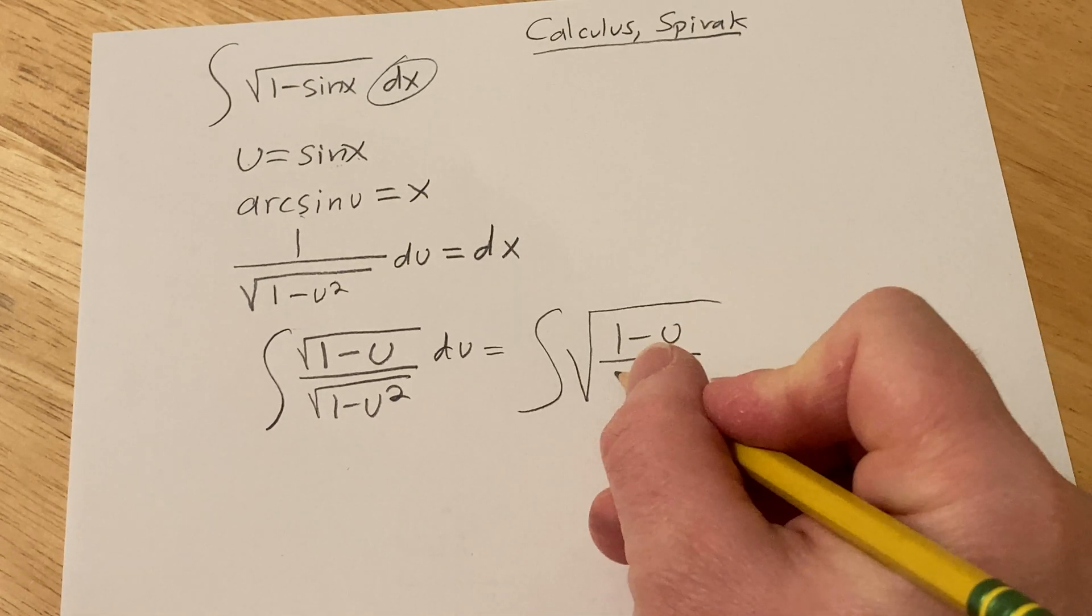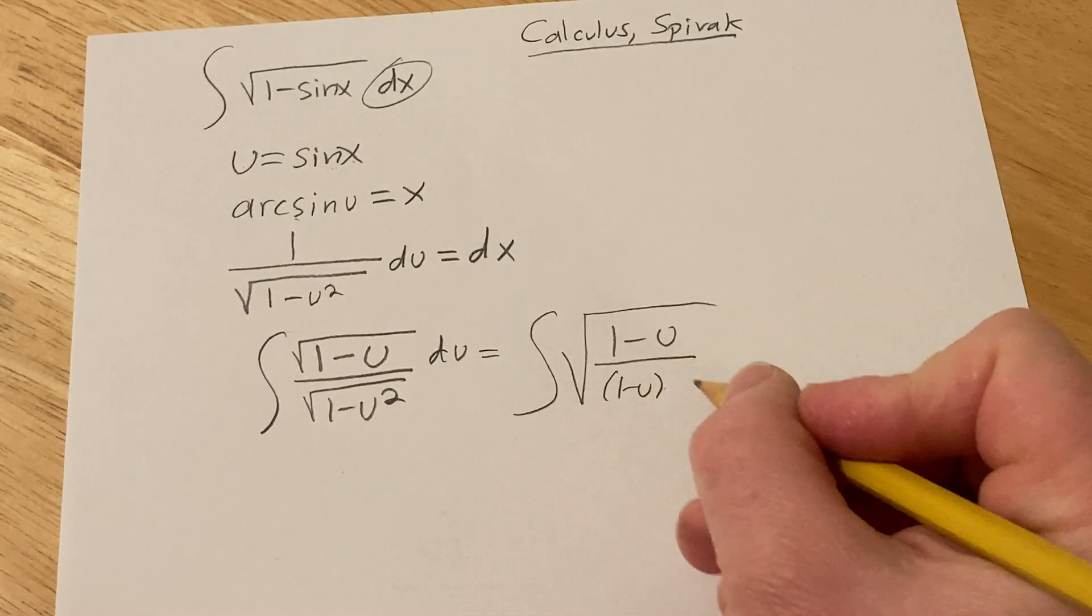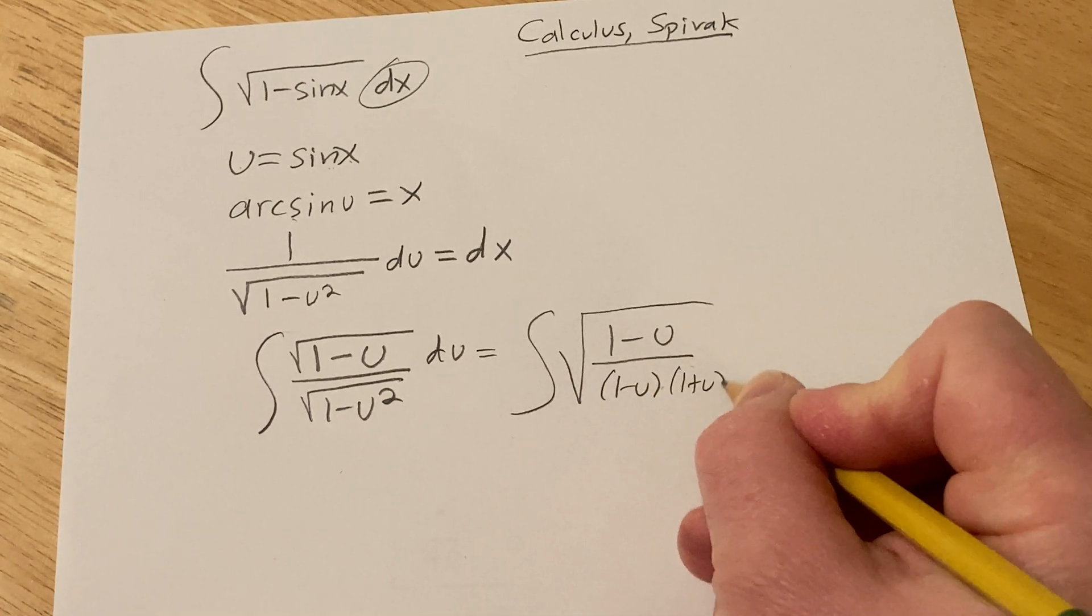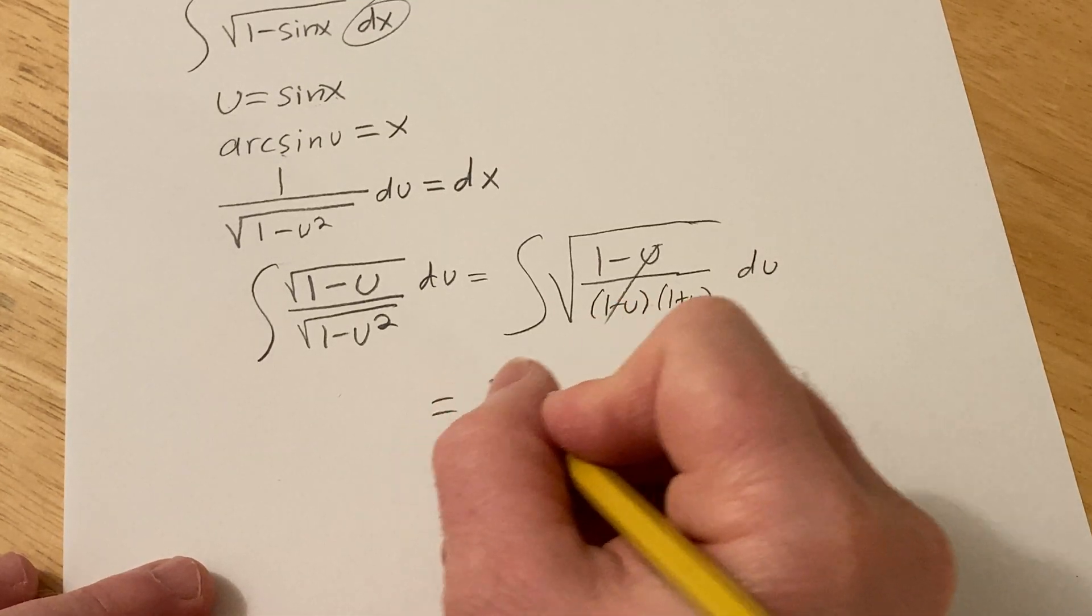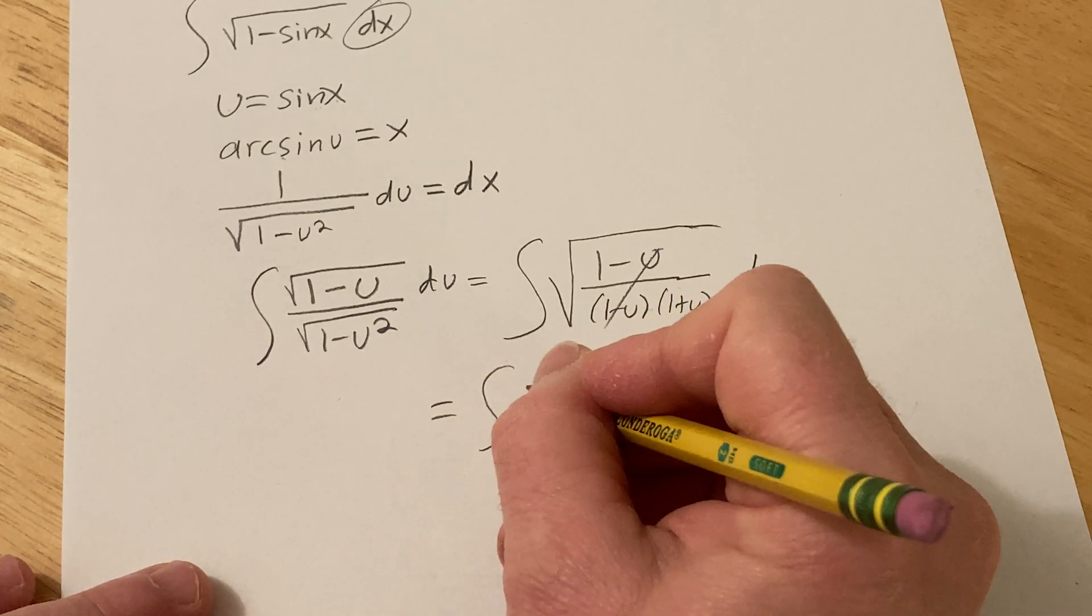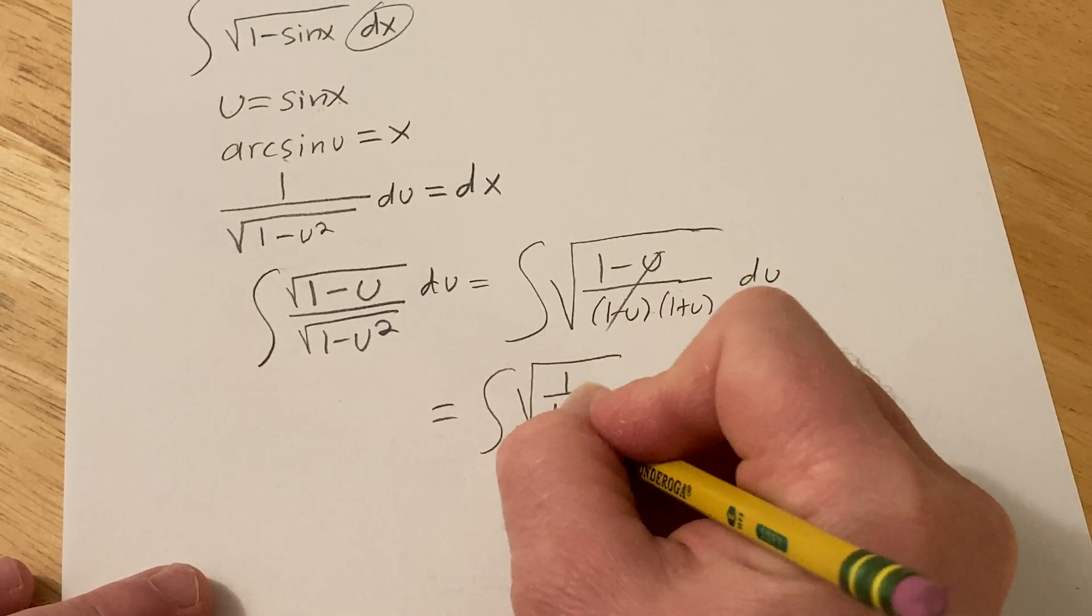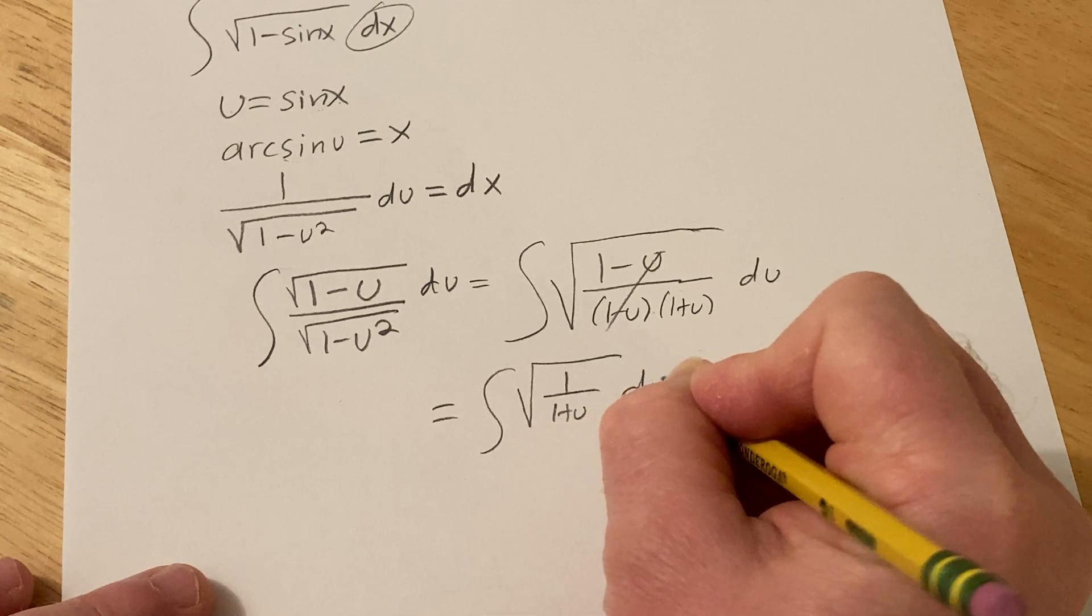and this is the difference of squares, you can write this as 1 minus u, 1 plus u, du, boom. So this is equal to square root 1 over 1 plus u, du, we should be able to do this.